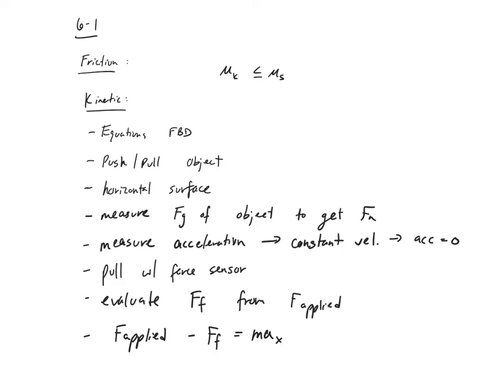FF is a function of the microscopic contact on both surfaces, which is rated as mu. And it increases with the amount of force pushing down on the object — the harder you push down, the more weight pushing down increases the force downward, which increases F_N. So F_N is directly related to FF, and mu is as well.